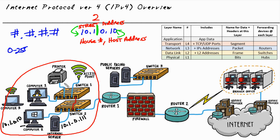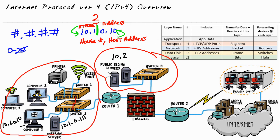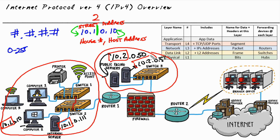Any computers on that network need to agree about their first two numbers being 10.1. Now if we have another network — we've got another network up here where our public-facing servers are — maybe this network is going to be 10.2. See, a different network, like a different street. Then we have individual host addresses: maybe this server is 10.2.0.50 and this server is 10.2.0.51. The key is that the network portion needs to be the same for anybody living on the same network or the same street, and then individual hosts have unique host addresses on that network, so we don't have any duplicate Layer 3 IP addresses in use.